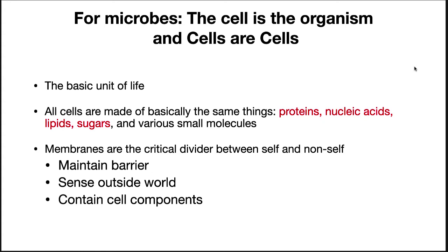Every cell has similar components at the macromolecular level: proteins, nucleic acids, lipids, sugars, and various small molecules. The critical divider between the cell and the environment is the cell membrane. It serves as a barrier, senses the outside world, and holds together all the cell's components.